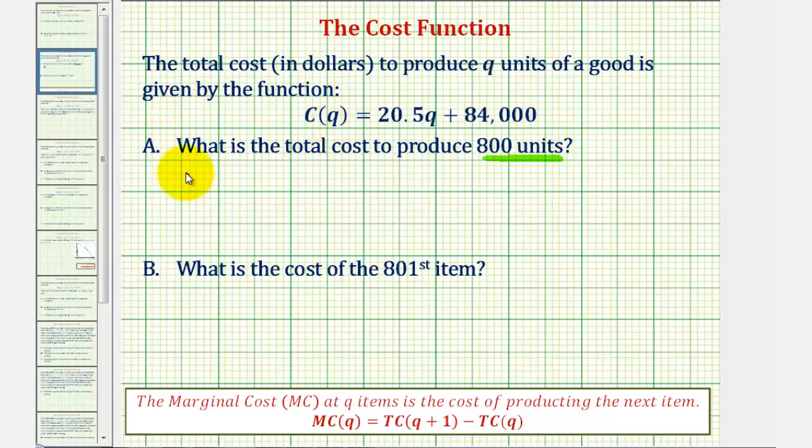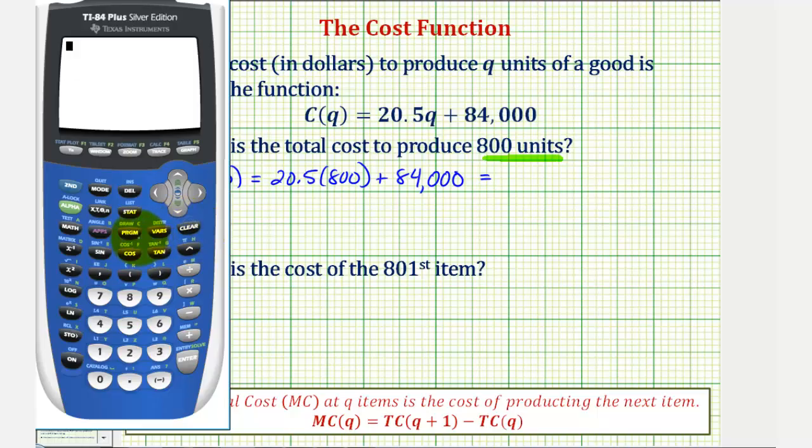So C of 800 would be equal to 20.5 times 800 plus 84,000, which is equal to 100,400.